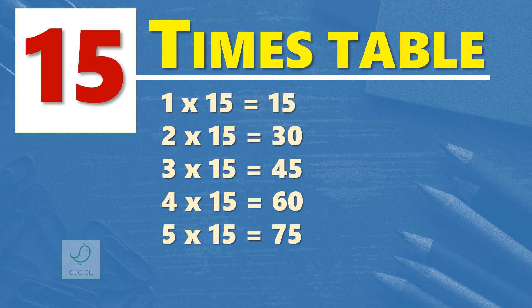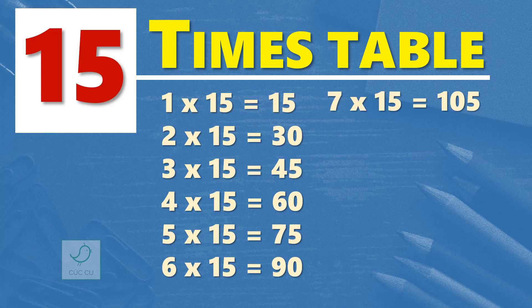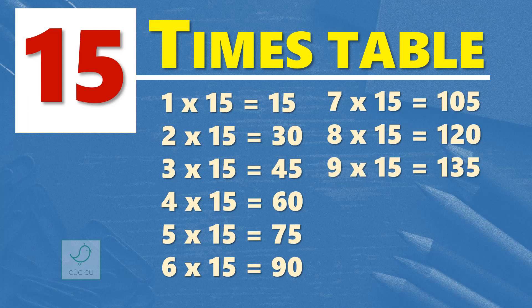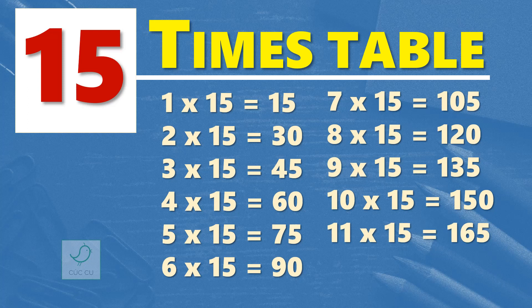Six times 15 are 90. 7 times 15 are 105. 8 times 15 are 120. 9 times 15 are 135. 10 times 15 are 150. 11 times 15 are 165. 12 times 15 are 180.